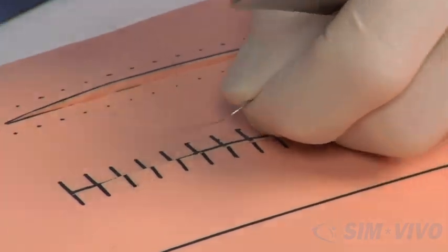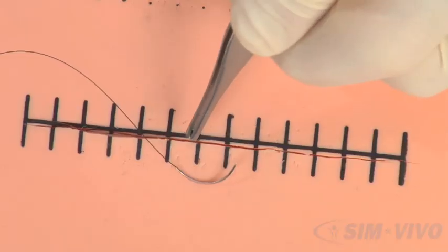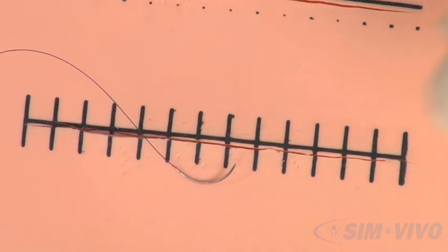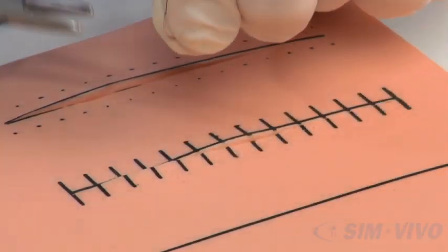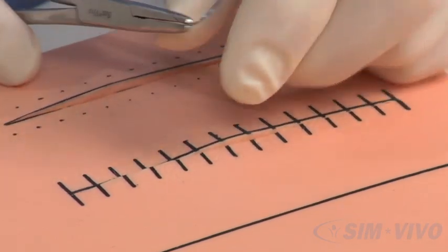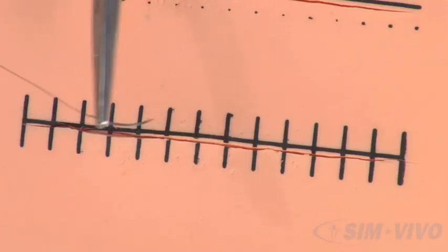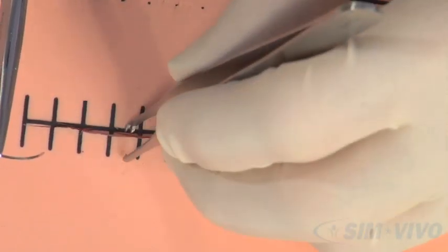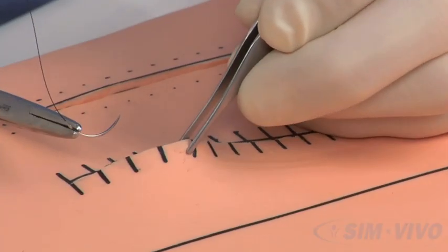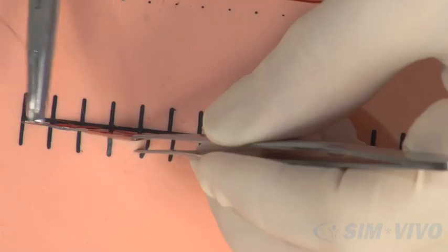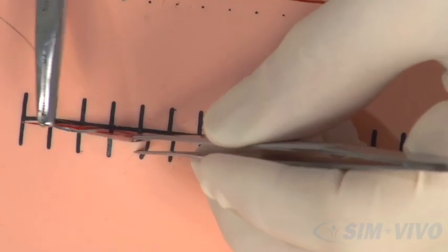We start off the same as before: use a 19 millimeter needle on a 4-0 nylon suture, load it like before perpendicular to the end of the needle driver. You're going to start on the top end of the wound. What you're going to do is enter on one cross hatch, exit on another cross hatch, and try to stay within the width of the skin.